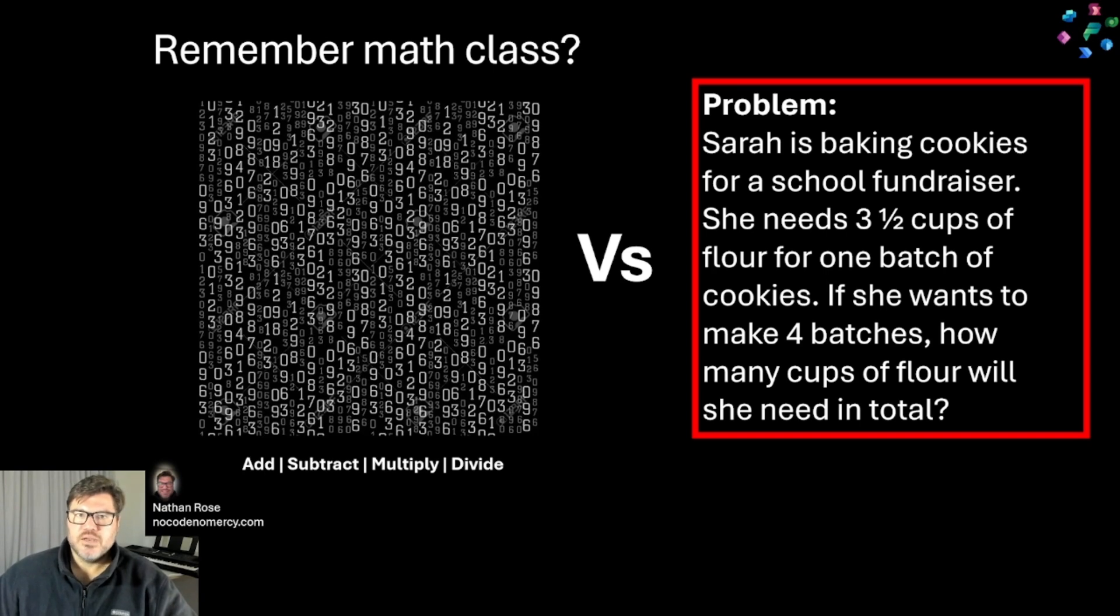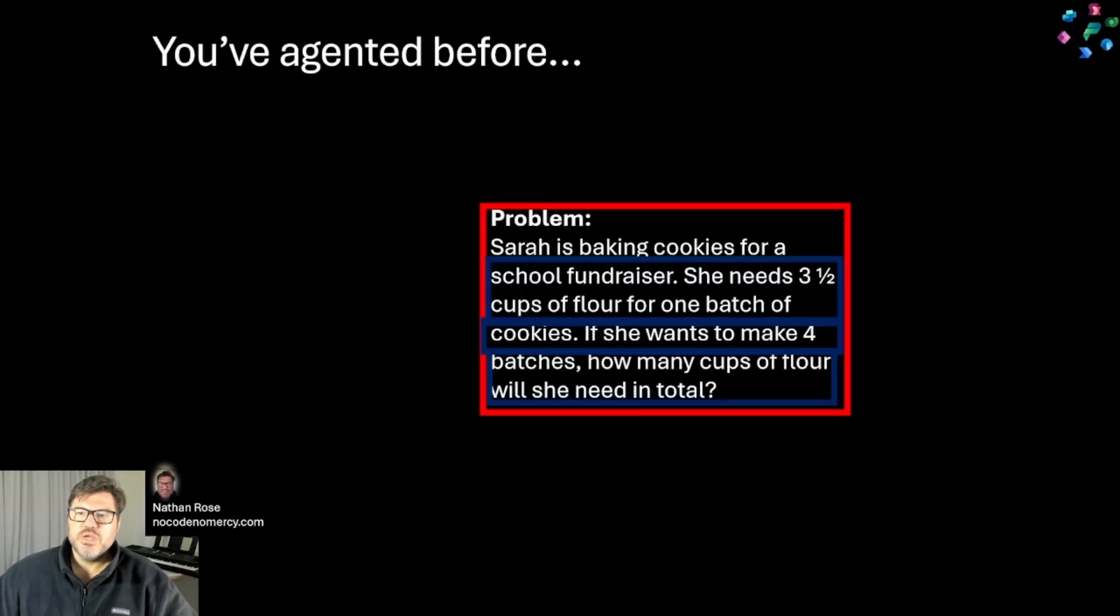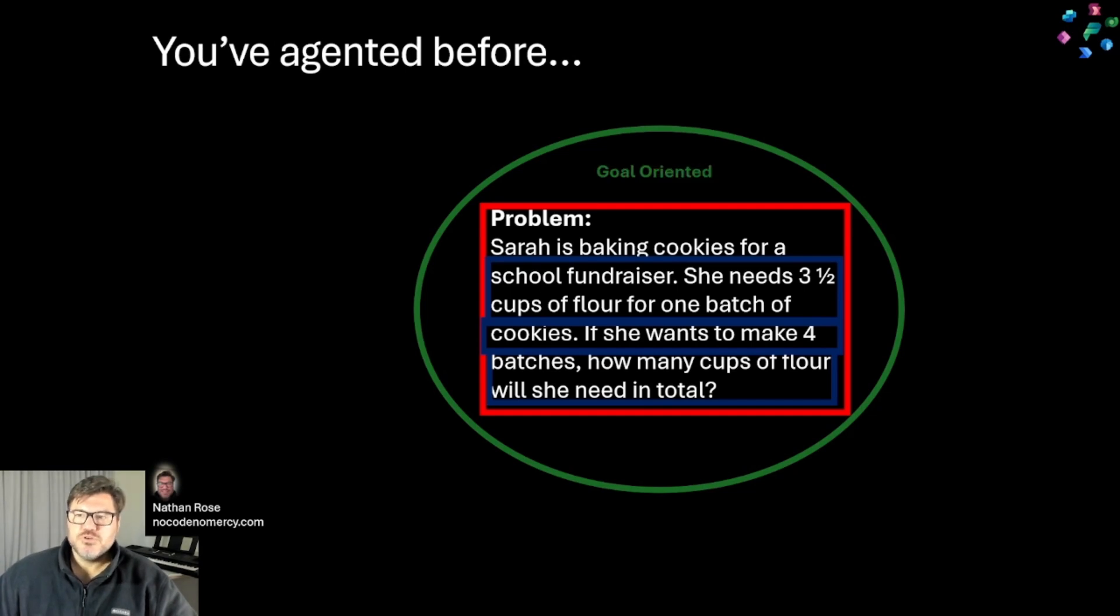Believe it or not, when you were 12, you were prepared for the world of agentic AI because you've performed the role of an agent before. When we read this paragraph, firstly, it's goal-oriented. We know we're reading this to solve a math problem. We're context-aware - our context is math.